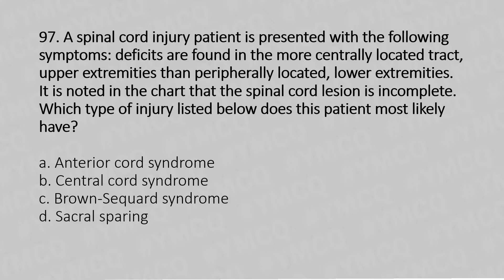Moving to our 97th question. A spinal cord injury patient presents with deficits found more in the centrally located tracts of the upper extremity than the peripherally located lower extremity. The spinal cord lesion is noted as incomplete. Which type of injury does this patient most likely have? Option A: anterior cord syndrome. Option B: central cord syndrome. Option C: Brown-Séquard syndrome. Option D: sacral sparing. The answer is Option B — central cord syndrome.